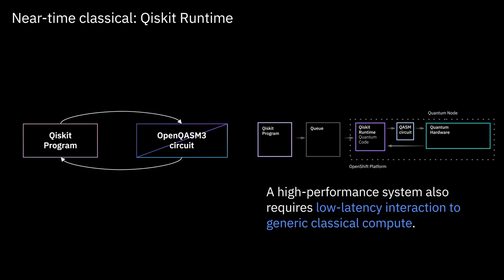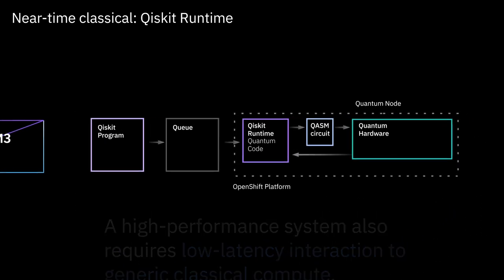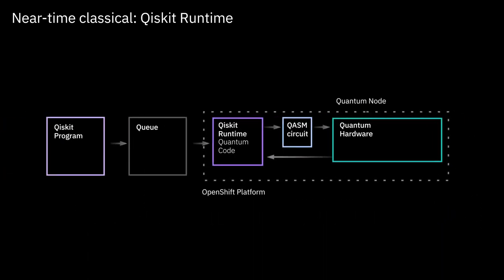The Qiskit Runtime changes the use model for quantum hardware so that instead of submitting circuits, you can now submit a program. That program will execute near co-located with our quantum hardware in one of IBM's quantum data centers. When we initially launched the Qiskit Runtime, we set ourselves a goal of showing a 100x speedup on a chemistry problem — which seemed very difficult — but we were very pleased to surpass that goal and show a 120x speedup on a chemistry simulation, thanks to improvements across the hardware and software stack.